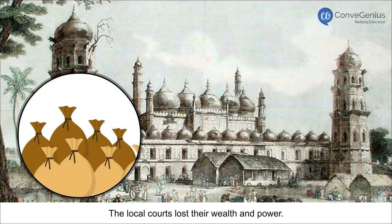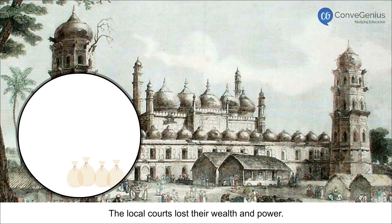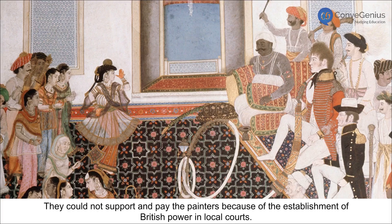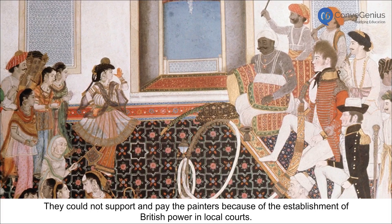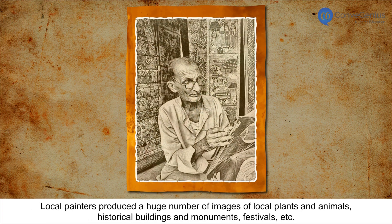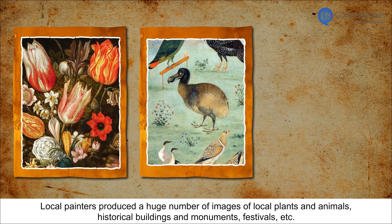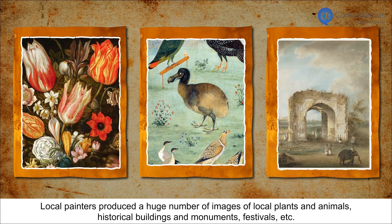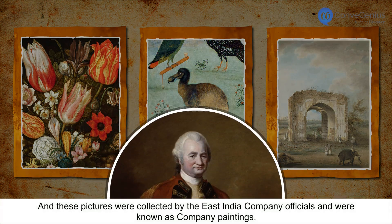The local courts lost their wealth and power. They could not support and pay the painters because of the establishment of British power in local courts. Local painters produced a huge number of images of local plants and animals, historical buildings and monuments, festivals, and so on. These pictures were collected by East India Company officials and were known as Company Paintings.